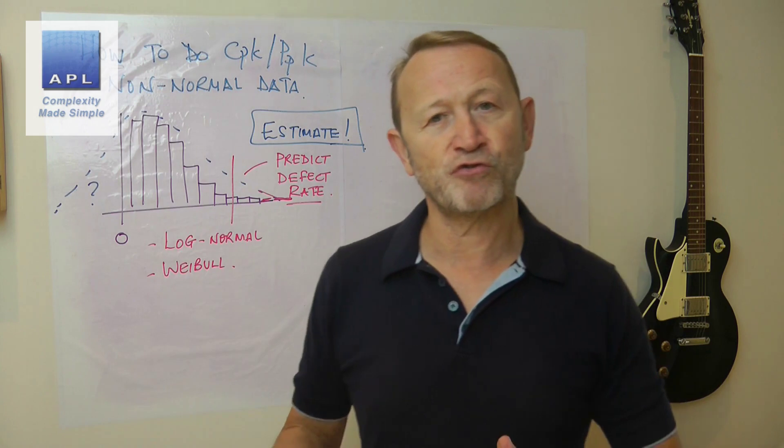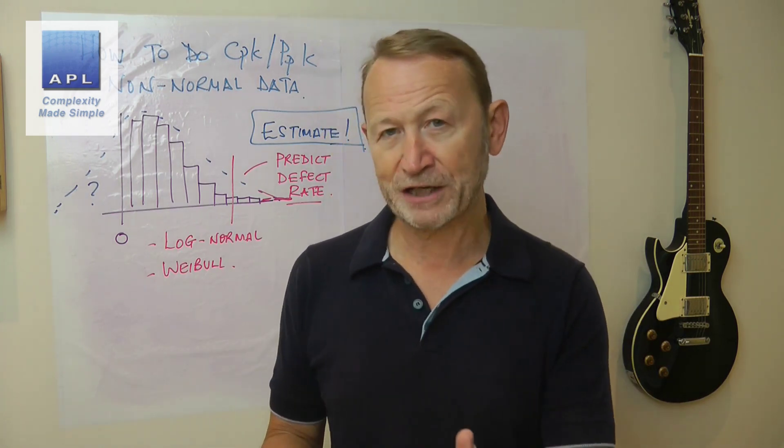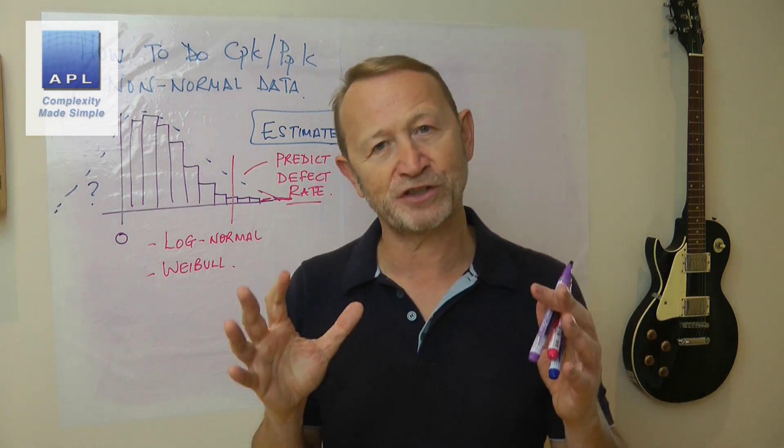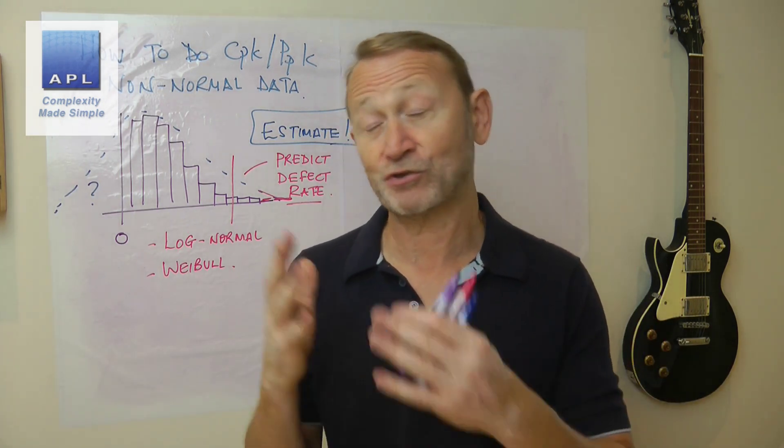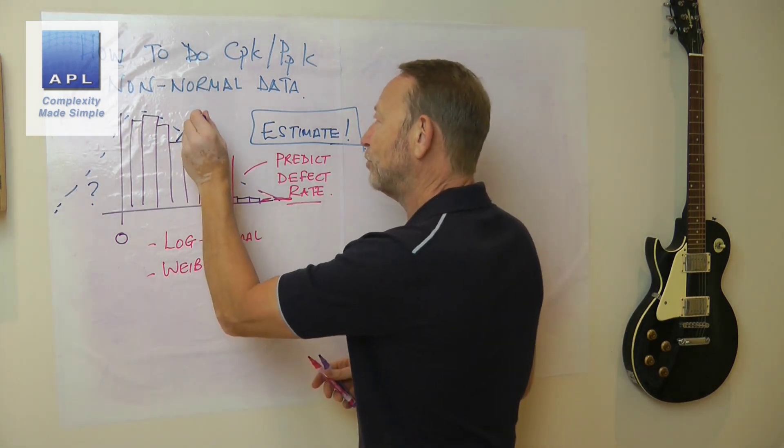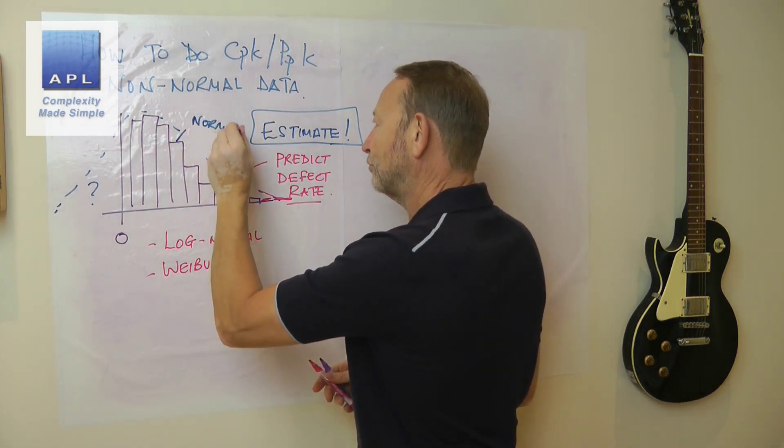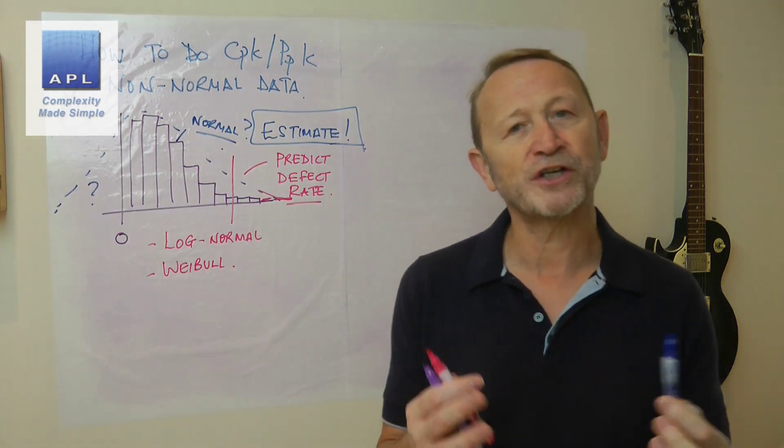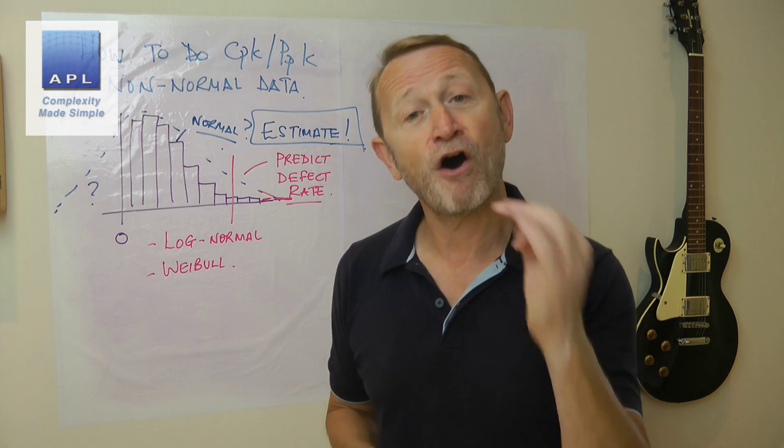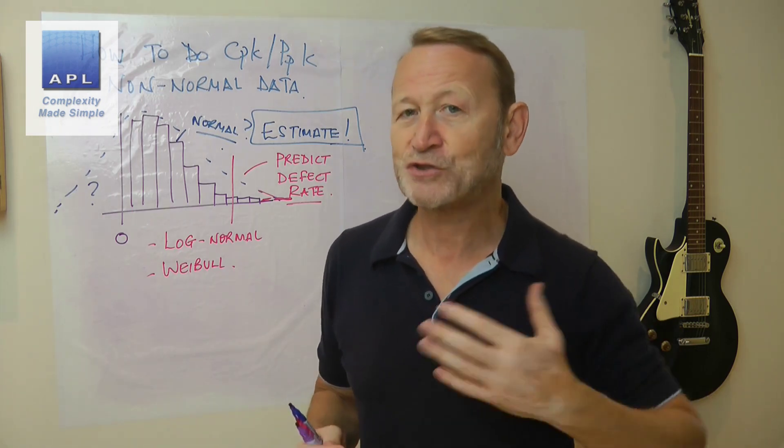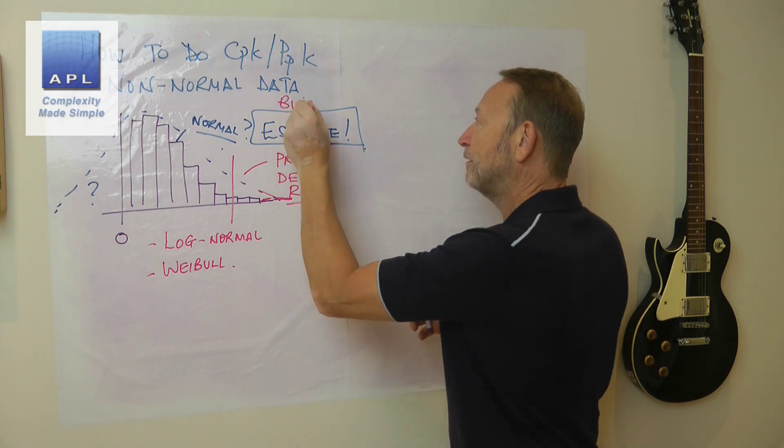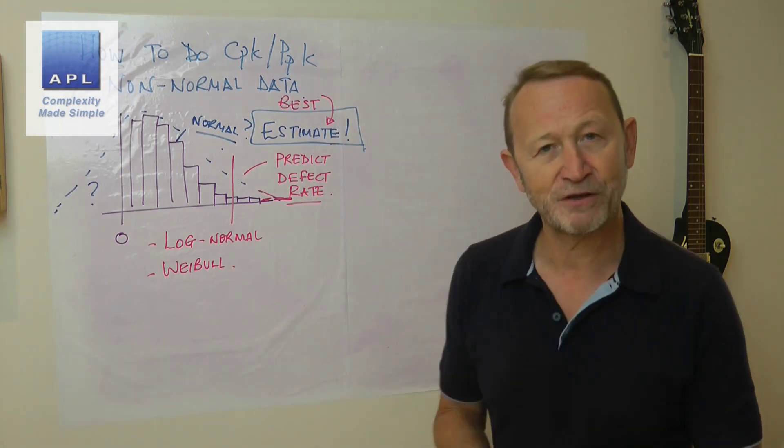So whenever you use a distribution to evaluate the defect rate, you should always ask the question, is it a good estimate? Is that a good estimate of what's happening? Now this is why we do the mathematical test, they check to see if this distribution is normal or not. And if it's not normal, they decide not to use it. Quite honestly, though, it could still be giving you the best estimate of your defect rate. So although it's not normal, it doesn't mean you discard it and you don't use the CPK and the PPK. You are looking for the best estimate of what's going on.